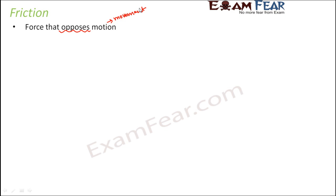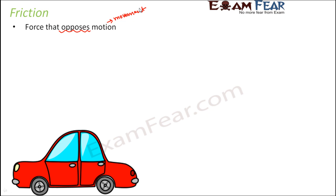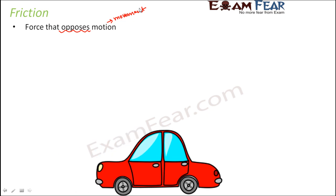Take any example where motion is involved — for example, a toy car or a real car. Whenever you try to move the car, you start it or apply some force so the car is able to move. But at every moment, there is another force acting on the car that wants it to stop. So the car moves only up to a certain distance for a certain period of time and then it stops.